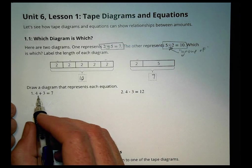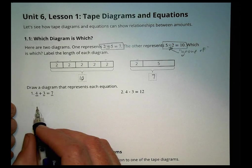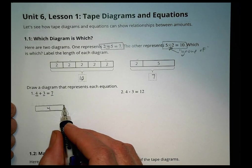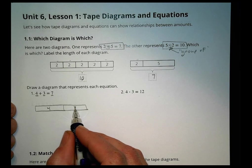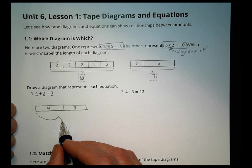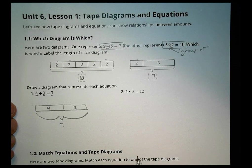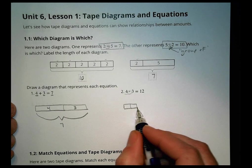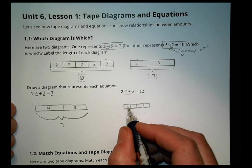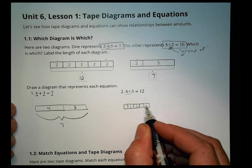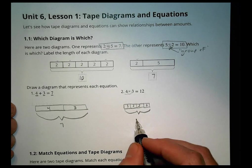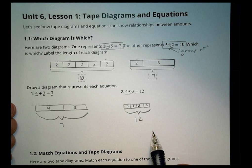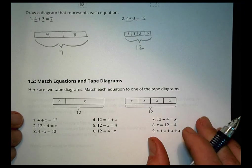Now let's draw a diagram for each equation. The first one says 4 plus 3 equals 7, so we draw a rectangle labeled 4 and another labeled 3 for a combined length of 7. For 4 times 3, we draw four groups — one, two, three, four — with a 3 inside each one, for a combined value of 12, because four groups of three is 12. So we have an addition one and a multiplication one.